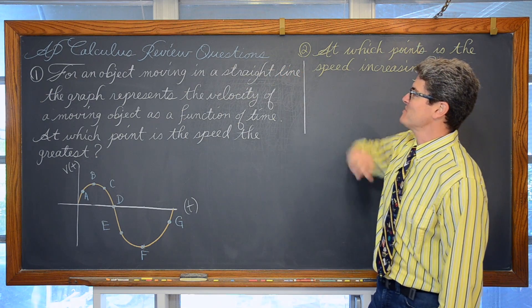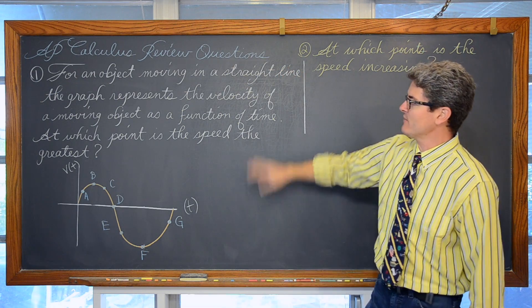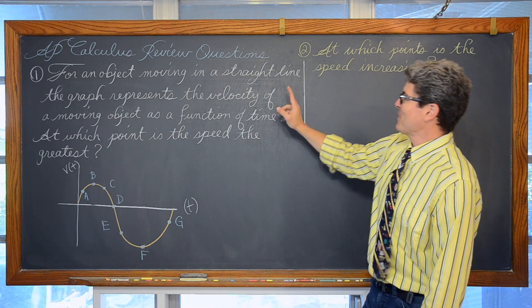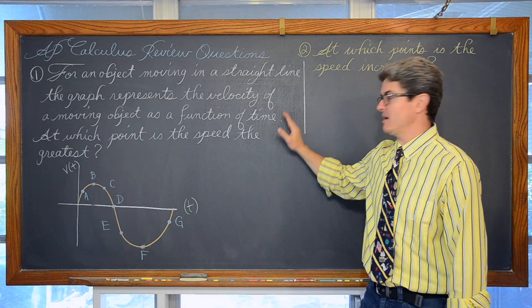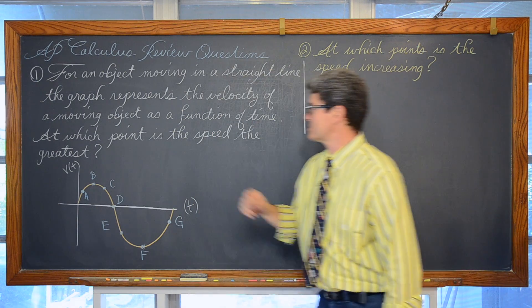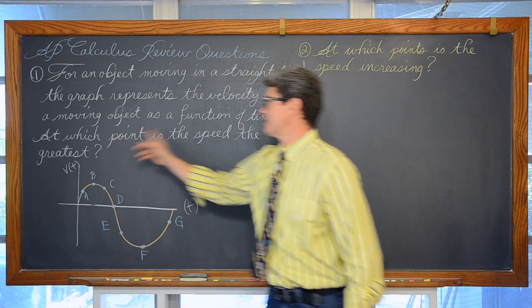Like Bam! So for an object moving in a straight line, the graph represents the velocity of an object moving as a function of time. So the x axis is time and the vertical scale is for the velocity.